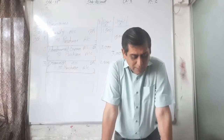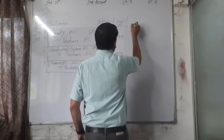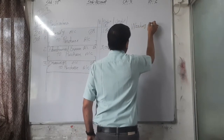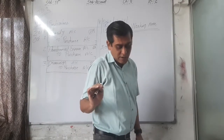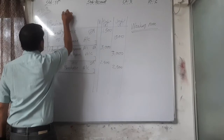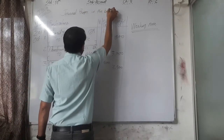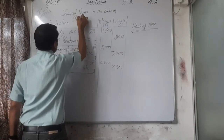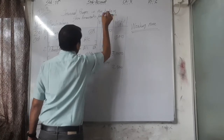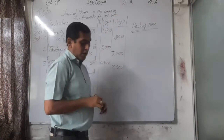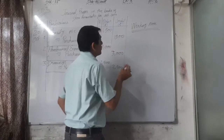Fourth transaction, October 4th: a bill of rupees 4,000 accepted by Priyanka was dishonored on the maturity date. This is in the books of Sri Amarna for October 2017. Working note: Amarna drew a bills receivable on Priyanka; Priyanka signed, accepted, and returned it. The entry at the time of issue was: bills receivable account debit 4,000, to Priyanka account 4,000.